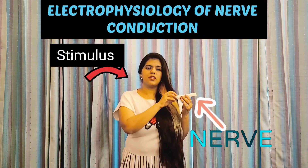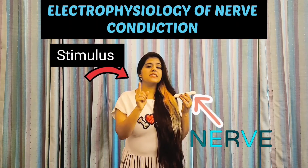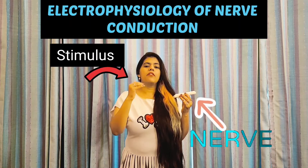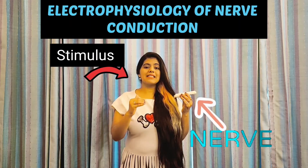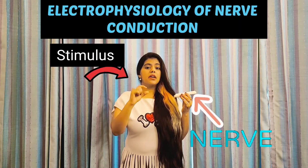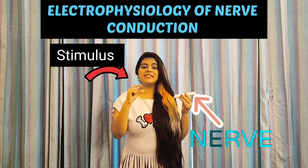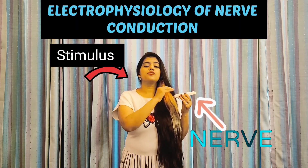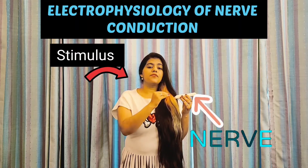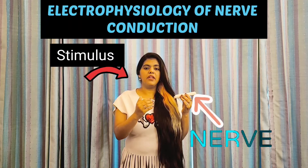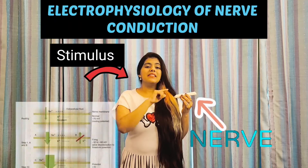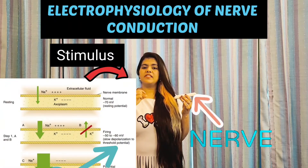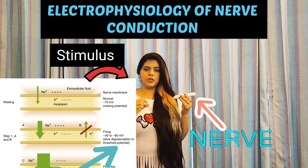Whenever a stimulus comes, it will excite the nerve, causing a change in the potential of the nerve. The first step is the slow depolarization of the nerve — the resting potential changes from -70 mV to around -50 or -60 mV. When this step occurs, it is known as the slow depolarization of the nerve.